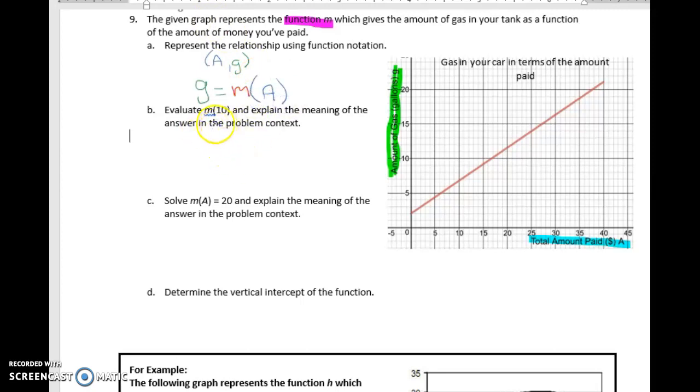And so when we evaluate M of 10, so I'm going to look here, and I am going to, M is my input quantity. So I know this, because I'm evaluating, so I know the input. And so I'm going to go and look at my 10 and go up to here. And I'm going to read over, and notice that this is about 7. And so my answer is going to be M of 10 equals 7.